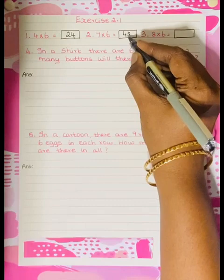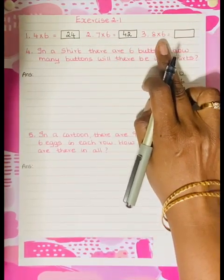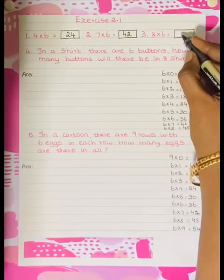You have to be very thorough in the tables. Then 8×6. 8×6 is 48.